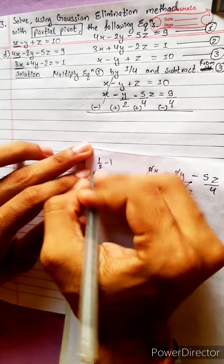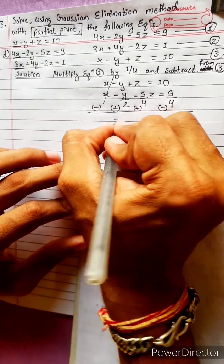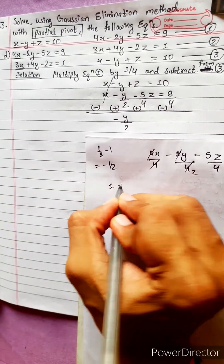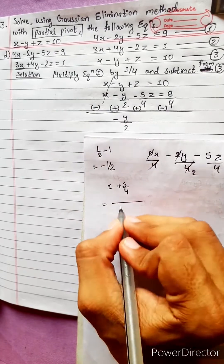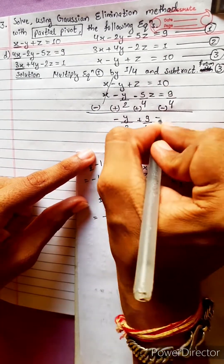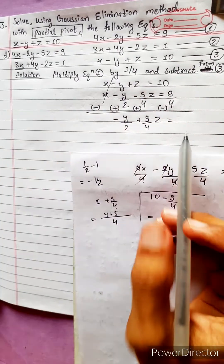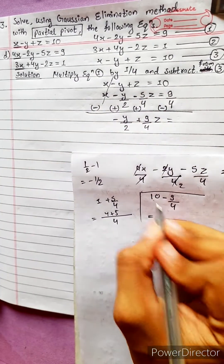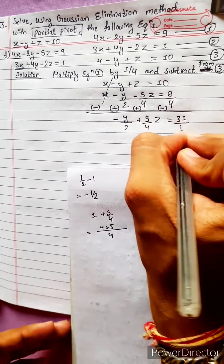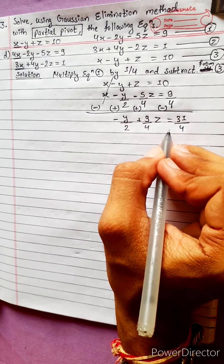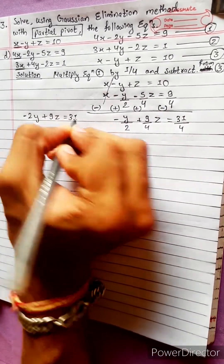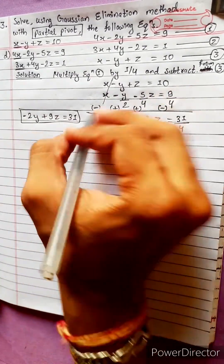After subtraction: negative y minus negative 1/2 y gives minus 1/2 y. For z: 1 plus 5/4 equals 9/4. For the right-hand side: 10 minus 9/4, LCM is 4, giving 40 minus 9 equals 31/4. Multiplying through by 4, this becomes minus 2y plus 9z equals 31. This is Equation 4.